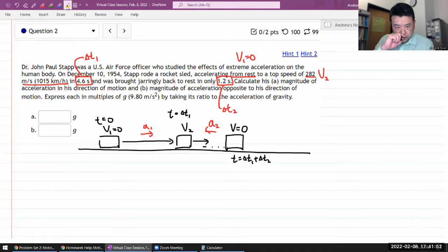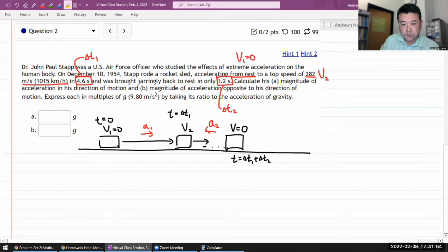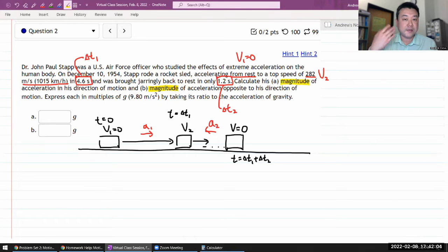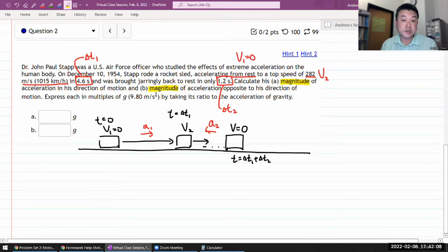Now as you are reading the question, one keyword I want to bring your attention to is the word magnitude. This is a word we use in connection with the vectors, and it's the word we use when we want to refer to the length of the vector. So by using this word, the question is asking you for the absolute value of the quantity you are asking for.